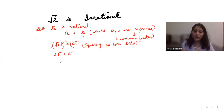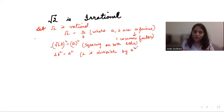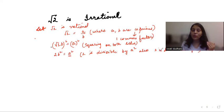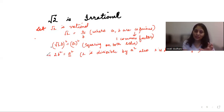Since 2b² = a², this means 2 is divisible by a². Because 2 divides a², 2 also divides a — from Theorem 1.3, which I have already explained in my previous video. The theorem states: if p is divisible by a², then p is also divisible by a.